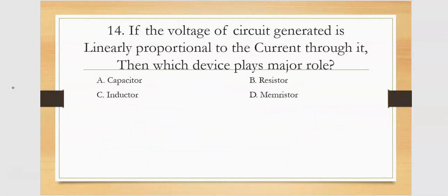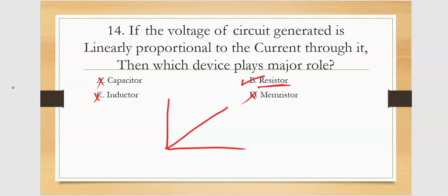If the voltage of a circuit generated is linearly proportional to the current through it, then which device plays a major role? That would be a resistor, which has a linearly varying curve — V is linearly proportional to I.